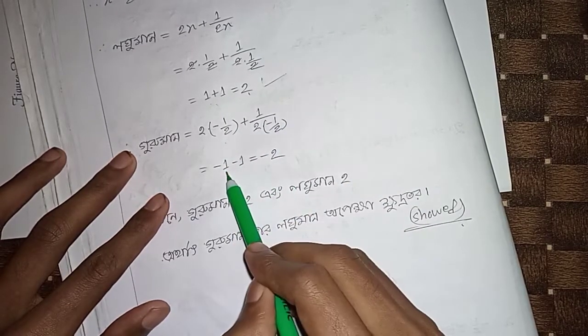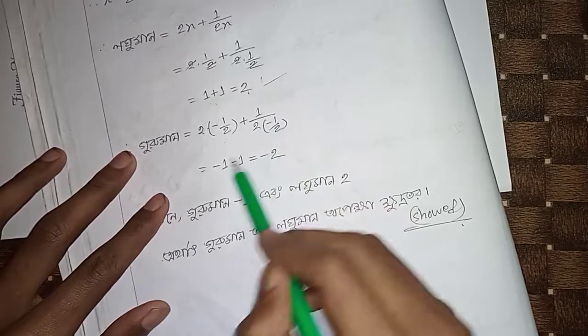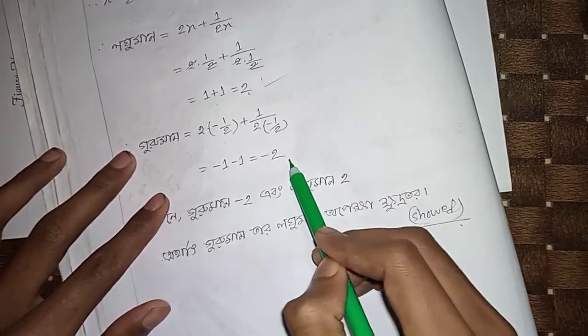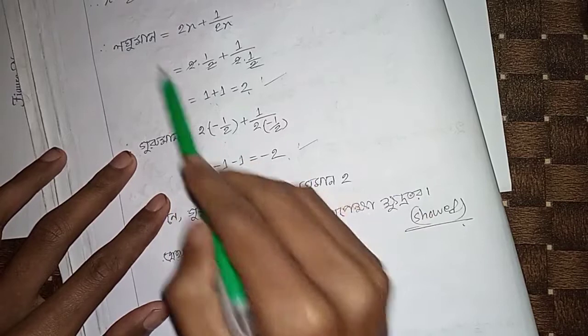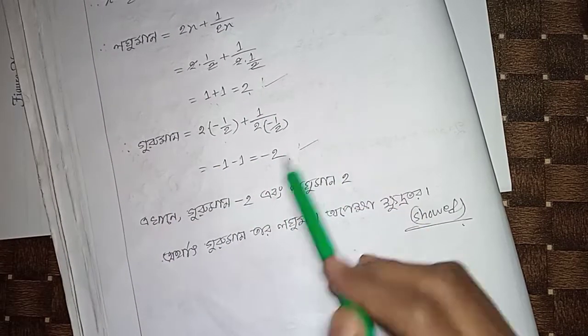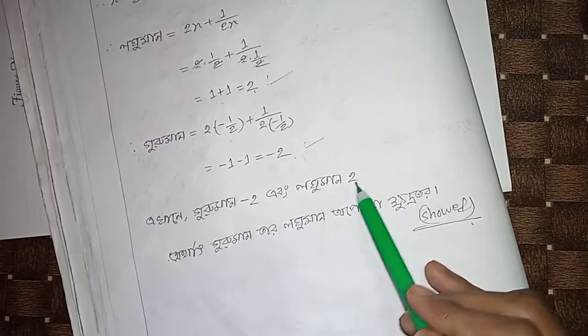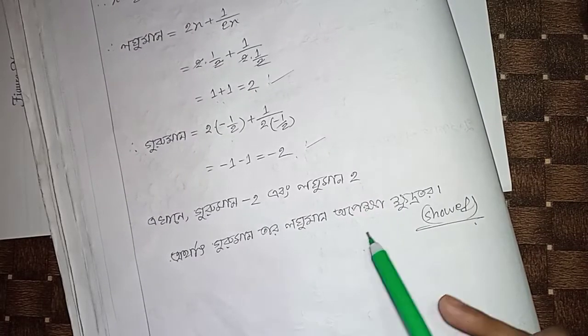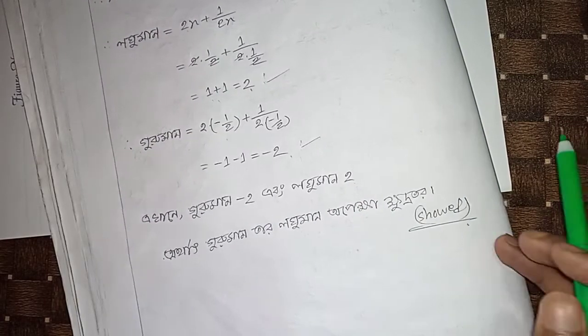For x equals minus half, y equals 2·(-1/2) plus 1/(2·(-1/2)) equals minus 1 minus 1 equals minus 2. The logarithm log(1) appears in the calculation, evaluating to minus 2.